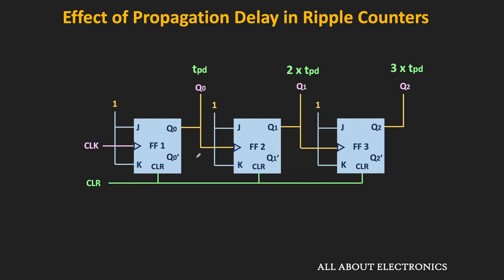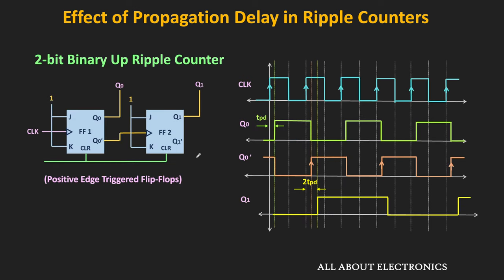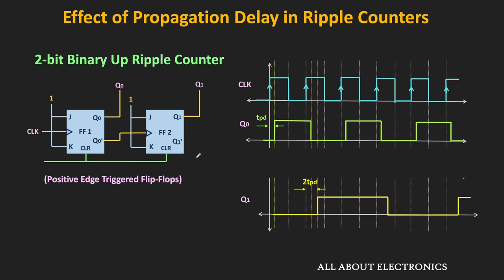Let us understand how this propagation delay will affect the output of the counter. Because of this propagation delay, momentarily, the output of the counter will go into an unwanted state. Let us take the case of the 2-bit ripple counter. During the first clock cycle, the output goes from 00 to 01 after the propagation delay of the first flip-flop. In the second clock cycle, the output should go from 01 to 10, but momentarily it goes into state 00, and then the output becomes 10.